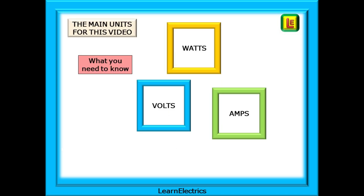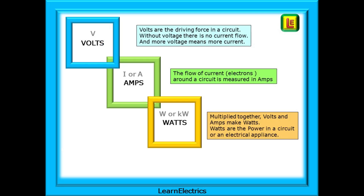These are the main units of electricity that we will look at in this video. If we know the watts and the volts we can find the amps and choose the correct fuse. Volts are the driving force in a circuit — without a voltage there is no current flow, and more voltage means more current. We use the letter V for voltage. The flow of current electrons around a circuit is measured in amps, and we use the letters I and A for amps. If we multiply volts and amps together we will have watts. The letter W is for watts, often written as kW for kilowatts — thousands of watts. Watts are an indication of the power in a circuit and how much work an electrical appliance can do.